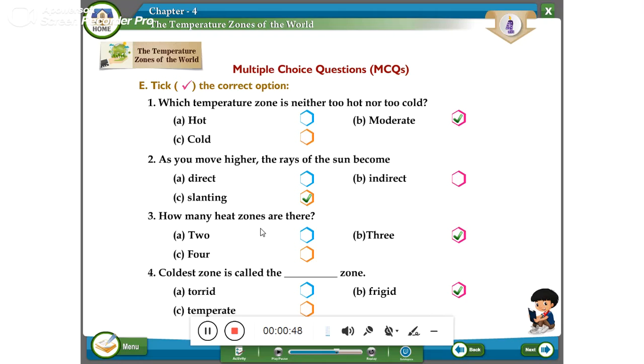Coldest zone is called the dash zone. Torrid zone, frigid zone, temperature zone. Frigid zone is the correct answer. You can tick the B one.